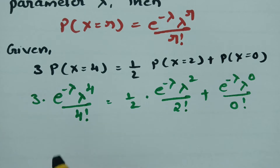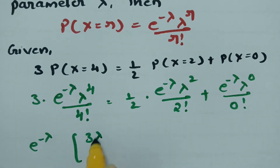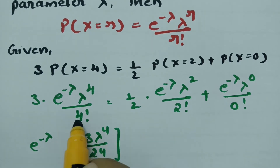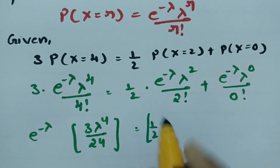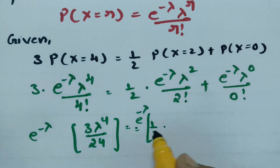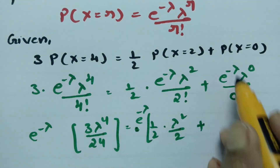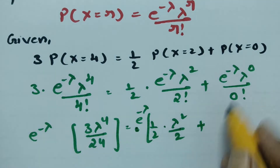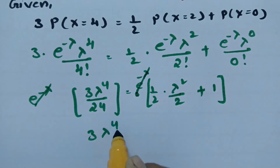Now, if I take e to the power minus lambda common from both sides, and cancel it on both sides, this gives 3 lambda to the power 4 divided by 24, equals lambda squared divided by 4 plus 1.